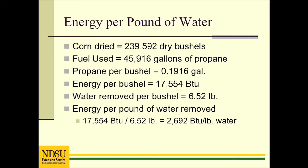The bushels dried used in the energy calculation is the dry bushels, because the amount of water removed is based on the standard 56-pound bushel. The gallons of propane used is divided by the number of bushels dried to determine the amount of propane used per bushel. That value is multiplied by the heat content of the propane to provide the energy used per bushel. Finally, that value is divided by the pounds of water removed per bushel to provide the energy consumption per pound of water removed. In this example, 2,692 BTUs are required to remove a pound of water.